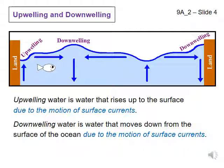Upwelling and downwelling. Upwelling water is water that rises up to the surface due to the motion of currents at the surface of the ocean. Downwelling water is water that moves down from the surface of the ocean due to the motion of surface currents.